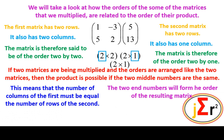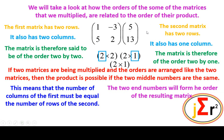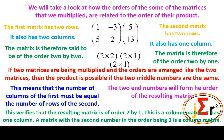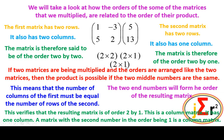This is quite practical because we have done this on numerous occasions and we saw that when we multiply a matrix of order 2x2 by one that is 2x1, we always get a column matrix. This verifies that the resulting matrix is of order 2x1. A matrix with the second number in the order being 1 is a column matrix.